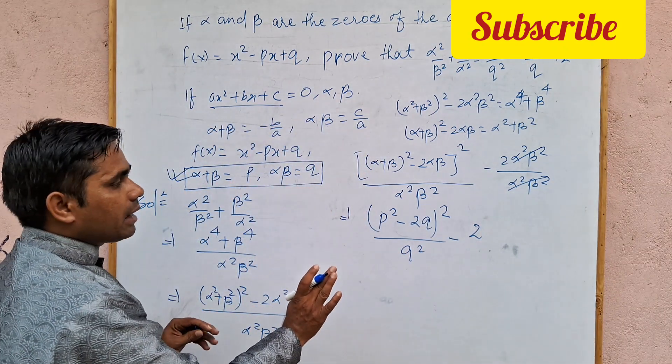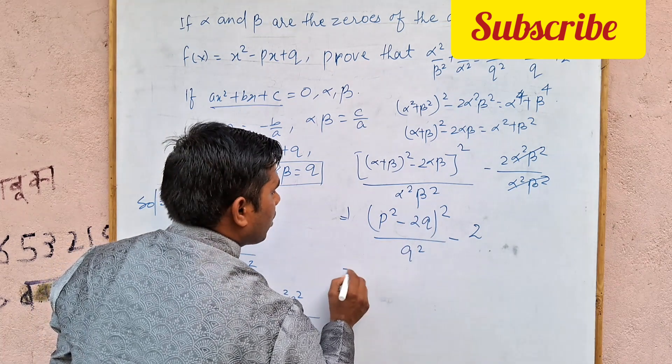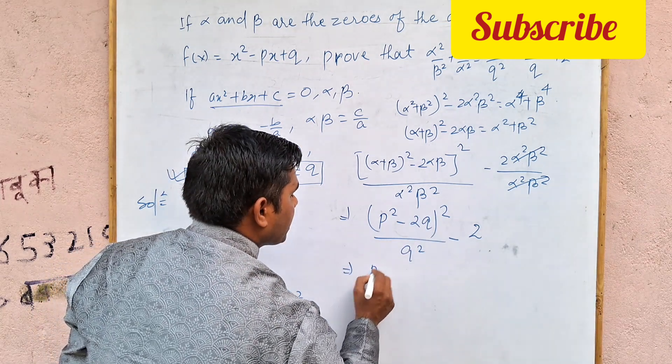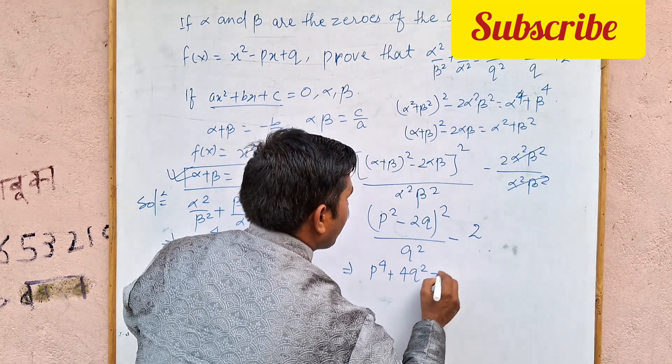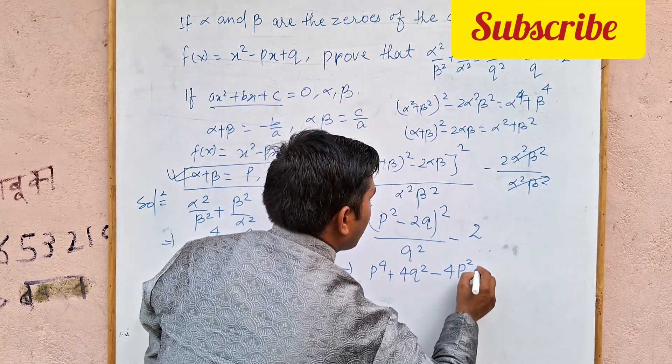Clear here? Here we have seen. Now we break A minus B, whole square. So, what will happen? P power 4 minus, minus plus, 4 Q square, minus 4, P square Q.